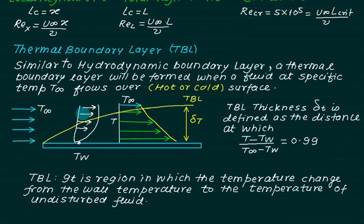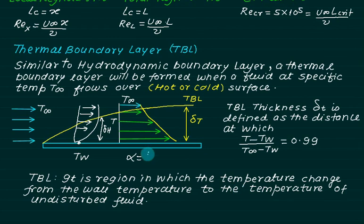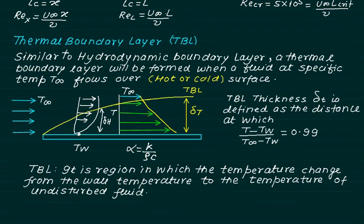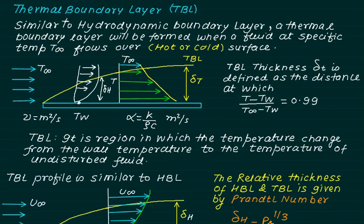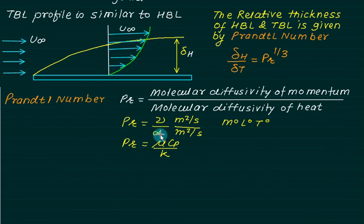The thermal boundary layer (TBL) is the region where temperature changes from wall temperature to the undisturbed fluid temperature. In the hydrodynamic boundary layer, viscosity plays the major role; in the thermal boundary layer, thermal diffusivity alpha plays the major role. Alpha is defined as thermal conductivity k divided by rho times c. Both kinematic viscosity and thermal diffusivity have the same units of meter square per second. Their ratio is the Prandtl number, which relates the thermal and hydrodynamic boundary layers.